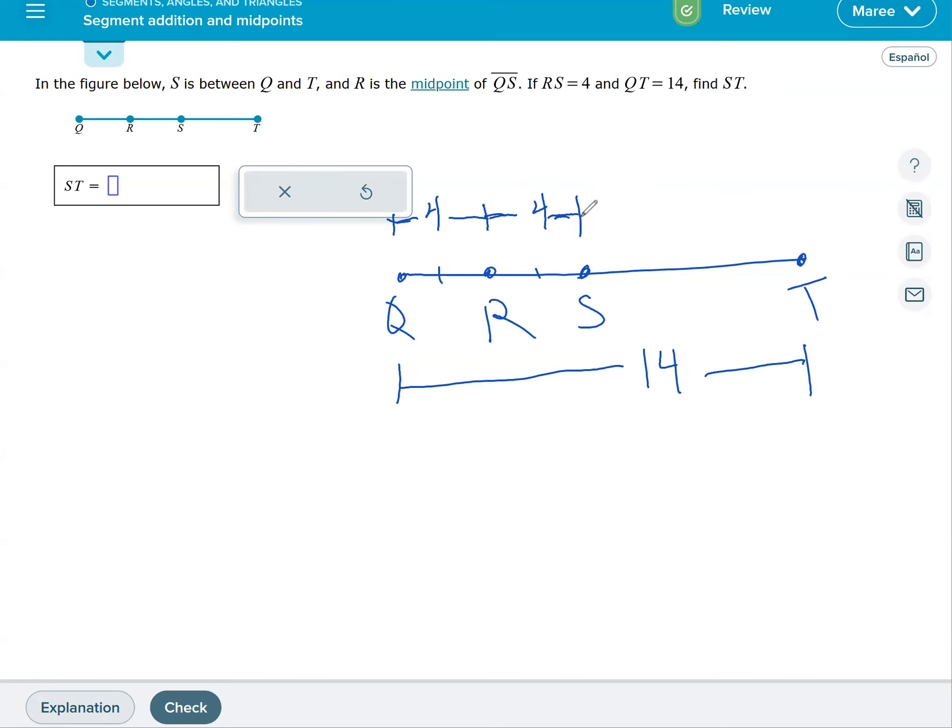Find ST. So this is the one that we want. So we have, if you add four plus four, this part is eight, the whole thing's 14. So we do 14 minus eight and we get six.